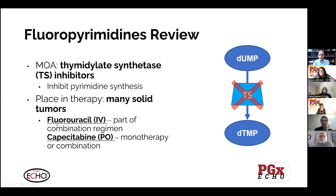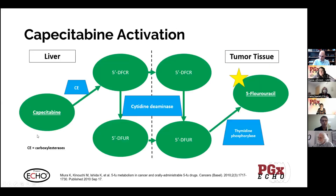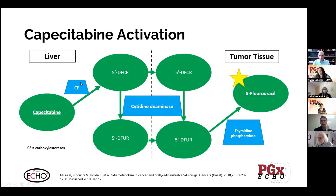Fluorouracil is the IV fluoropyrimidine used in combination regimens, and capecitabine is the oral form of fluorouracil that can be used as monotherapy or in combination with other chemotherapies. Capecitabine is actually a prodrug of 5-fluorouracil. The conversion from capecitabine to fluorouracil involves many steps occurring in both the liver and tumor tissue. Carboxylesterase occurs in the liver, cytidine deaminase is present in both liver and tumor tissue, and thymidine phosphorylase is the final step to convert to 5-fluorouracil, found only in tumor tissue.